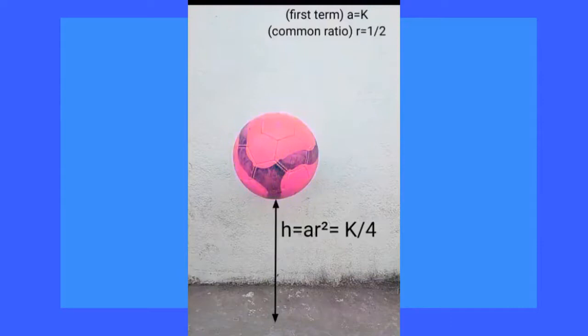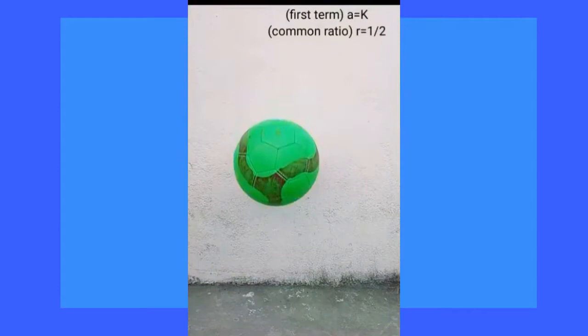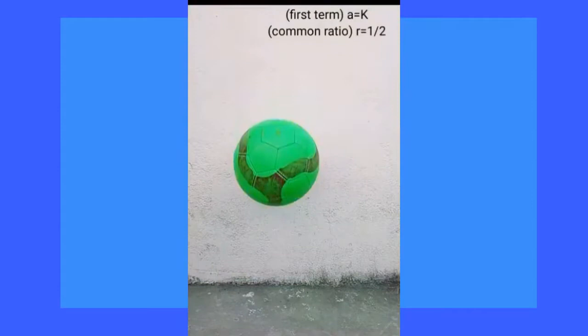Similarly, the maximum height reached gets halved progressively along with every bounce, making the successive terms of the GP to be k upon 8, k upon 16, k upon 32, and so on, until of course, the ball comes to rest.